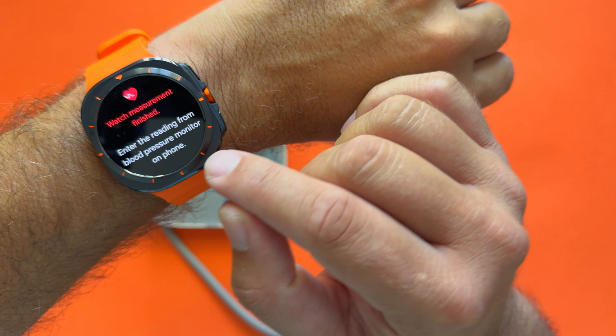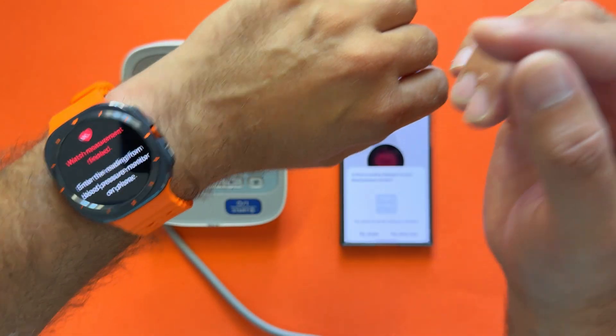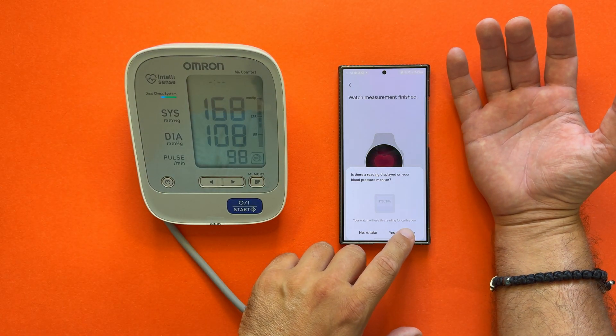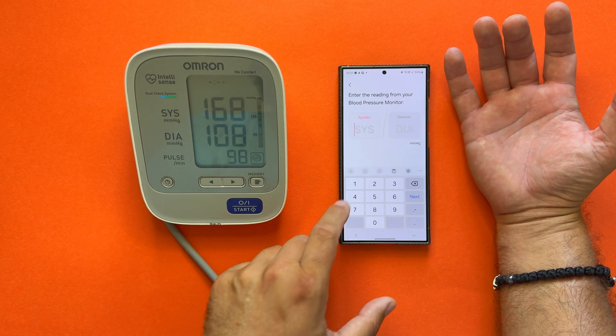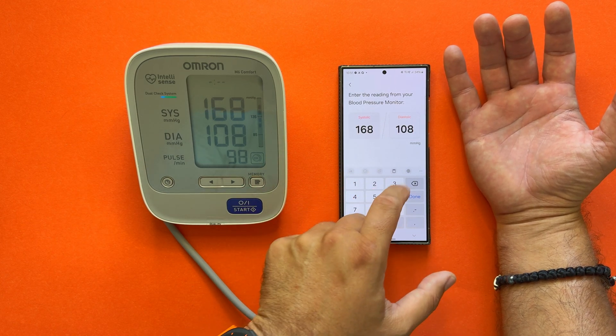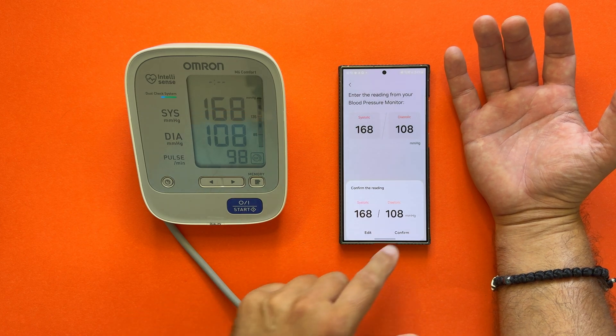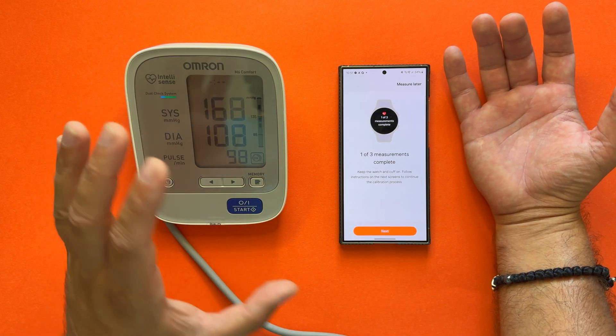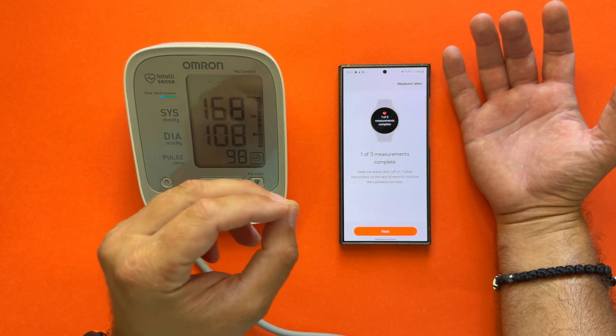Now what is important: enter the readings from the blood pressure monitor on the phone. I will enter it right now—I have 168 for the systolic and 108 for the diastolic. I'm going to press Done, confirm. Now we need to complete two more measurements. Let's do this.